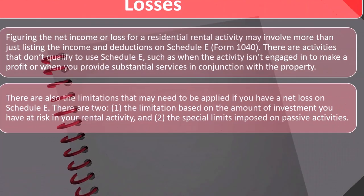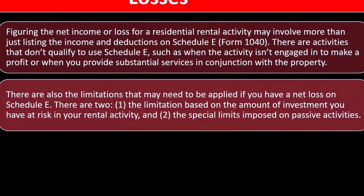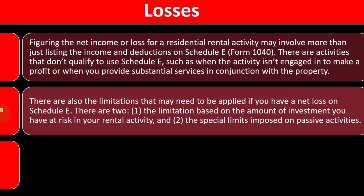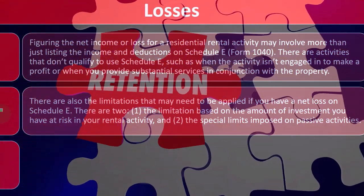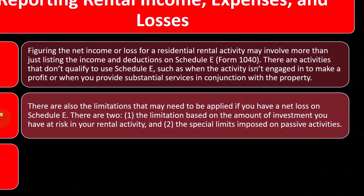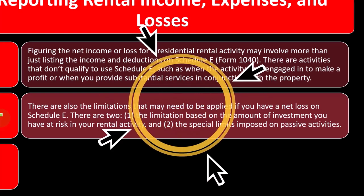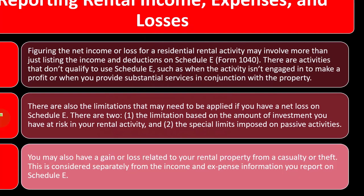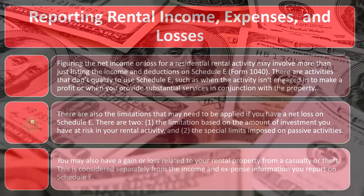There are also limitations that may apply if you have a net loss on Schedule E. Many people may have losses because the long-term plan with rental property isn't just to make money on rental income, but to hold property that appreciates in value — sustaining short-term losses while anticipating long-term gains. There are two key limitations: one based on the amount of investment you have at risk in your rental activity, and two, the special limits imposed on passive activities. Additionally, any gain or loss related to casualty or theft is considered separately from the income and expense information reported on Schedule E.